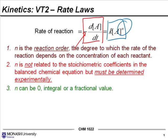n can be 0, it can be an integer, it can even be a fractional value. But we will just limit our conversation to reactions where n is 0, 1, or 2, and we say that this is zero order, first order, or second order.